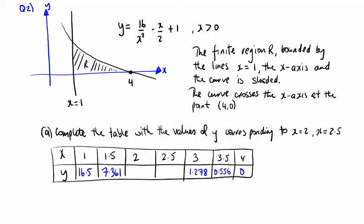Question 2. You're told the graph of the curve with equation y equals 16 over x squared minus x over 2 plus 1 is shown. The finite region R, which is the shaded region here, is bounded by the lines x equals 1, the x-axis and the curve. The curve crosses the x-axis at the point (4,0).